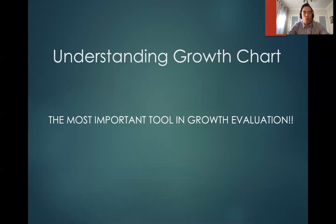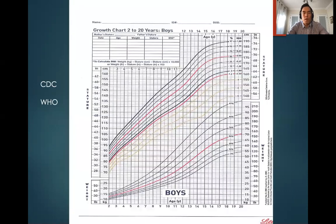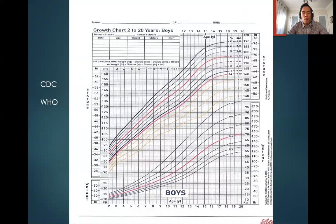Before we talk about abnormal growth, we have to understand normal growth. The most important tool in evaluating a patient with a growth problem is the growth chart. We have to understand and be able to interpret the growth data in order to accurately evaluate a patient with a growth problem. Many of you have seen this growth chart and felt very intimidated by it because it has a lot of lines and numbers.